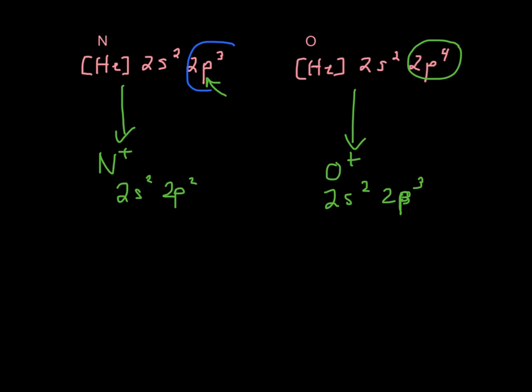So here, we went from half full to partially full, because P is 6, so 3 and 2. So this one does not want to happen. It wants to - this is more stable, not so much.